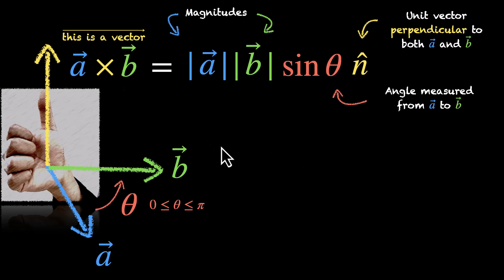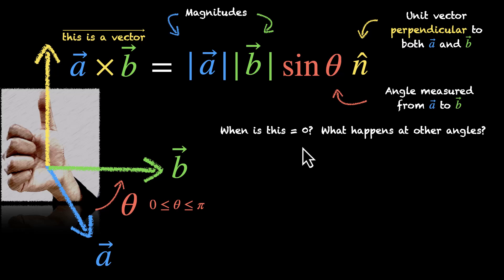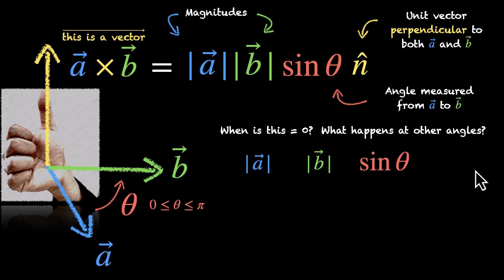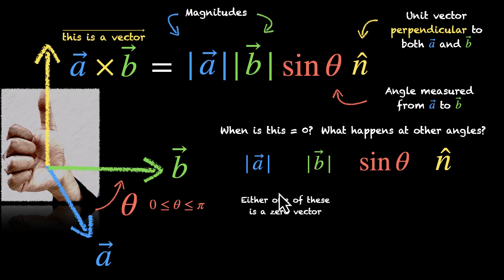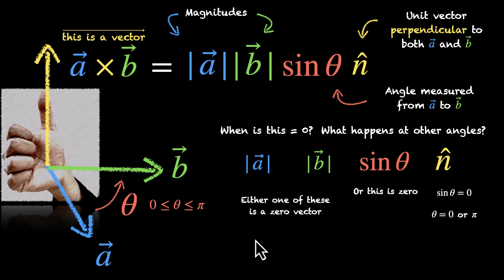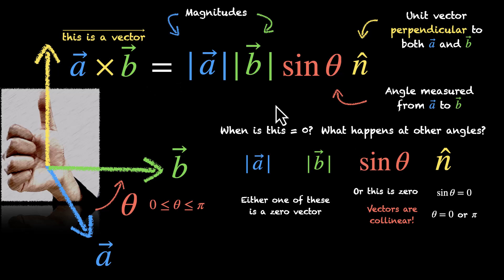Now let's ask the same questions we asked with the dot product — let's understand this formula better. When is the cross product 0, and what happens at other angles? If the cross product is 0, some part of the expression must be 0: magnitude of a, magnitude of b, sine theta, or n-hat. n-hat can't be 0 — it's a unit vector with magnitude 1. Magnitude of a and magnitude of b can be 0 if we're dealing with zero vectors. If that's not the case, then sine theta must be 0. Sine theta is 0 for theta equals 0 or theta equals pi — meaning the vectors face the same or opposite directions. In both cases, the vectors are collinear. So for collinear vectors, the cross product is 0. When we have a cross product equal to 0, we can say we are dealing with collinear vectors.